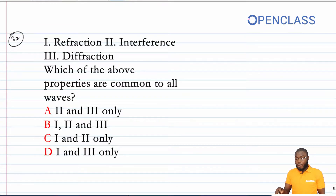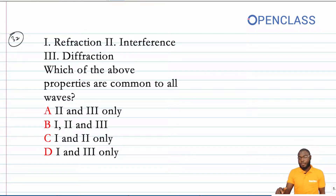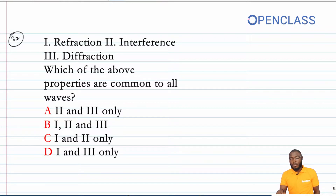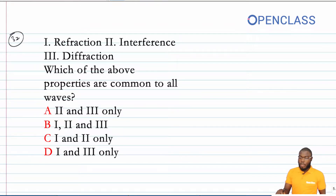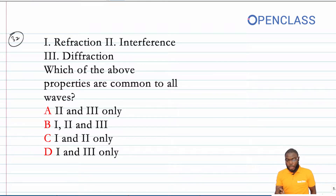Question 32 says: refraction, interference, and diffraction — which of the above properties are common to all waves? Refraction is a property of a wave, interference is a property of a wave, and diffraction is a property of a wave. So one, two, and three are all properties of a wave.